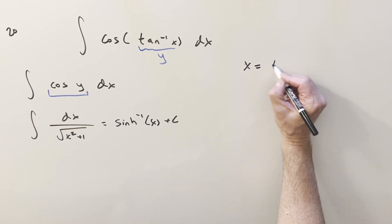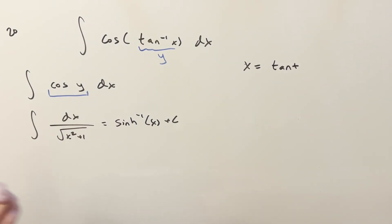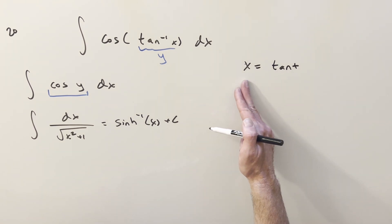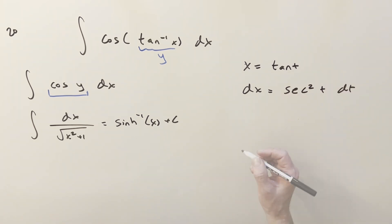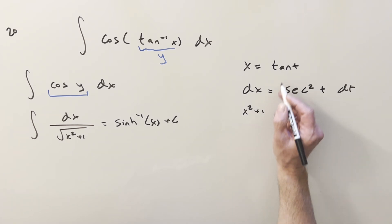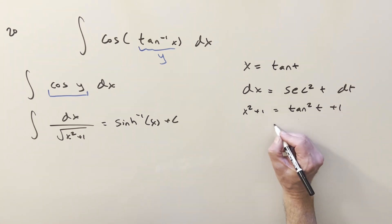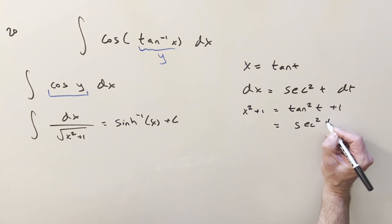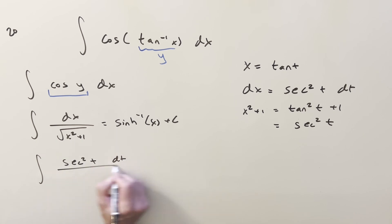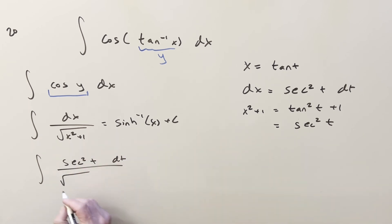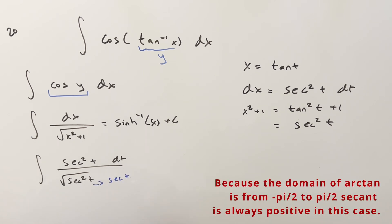Let's do the trig substitution, setting x equal to tan(t). You could do hyperbolic trig substitution here, but that would just get you back to the arcsinh answer. So we'll do x = tan(t), dx = sec²(t) dt. For x²+1, where x is tangent, that's tan²(t)+1, and by the identity tan²(t)+1 = sec²(t). Substituting, dx becomes sec²(t) dt, and x²+1 becomes sec²(t), so √(x²+1) becomes sec(t) — not worrying about absolute values here.